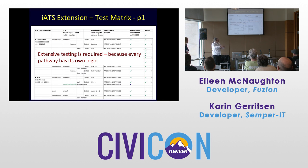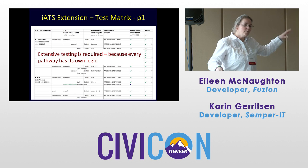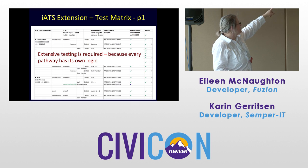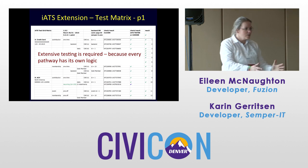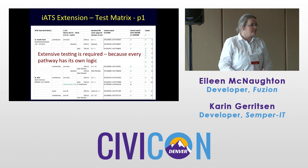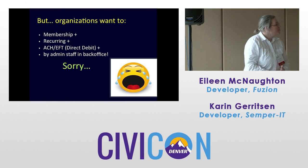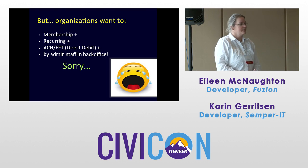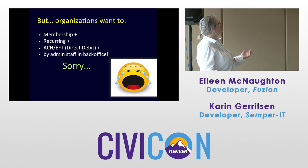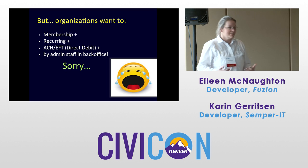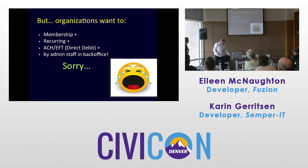Because there are so many references to logic everywhere, we have an extensive test matrix — this is page one of four pages — to make sure contributions are processed properly: one-time, front-end, back-end, daily, for membership or recurring via direct debit. Every pathway has its own logic and rules, so the only way to know it's working is to run them all through. Right now I have 21 transaction pathways supported in the IATS extension, but people want things like membership recurring direct debit via back office, and that simply can't be done right now.